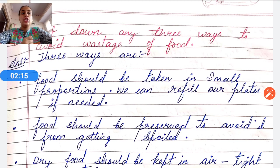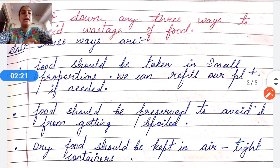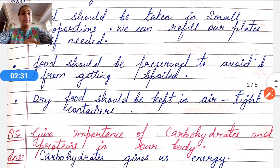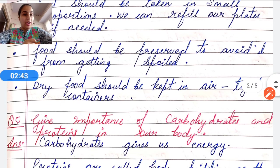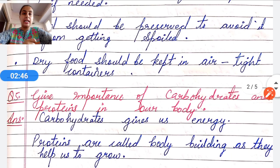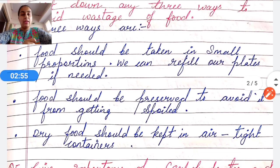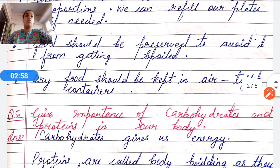Question number four: List down any three ways to avoid the wastage of food. Number one, food should be taken in small proportions; we can refill our plates if needed. Number two, food should be preserved to avoid it from getting spoiled. Number three, dry food should be kept in airtight containers.